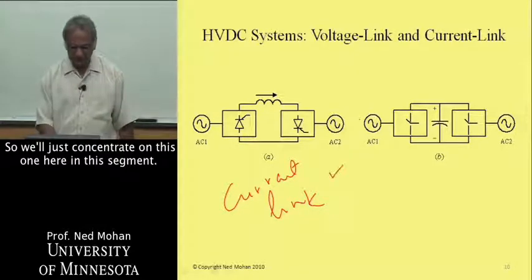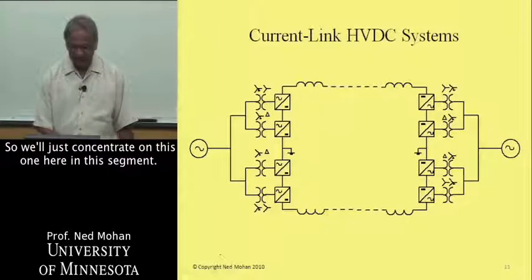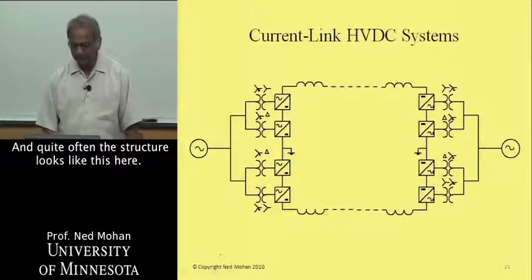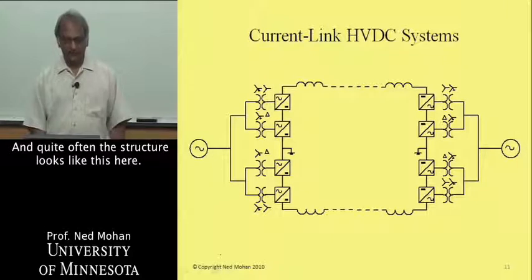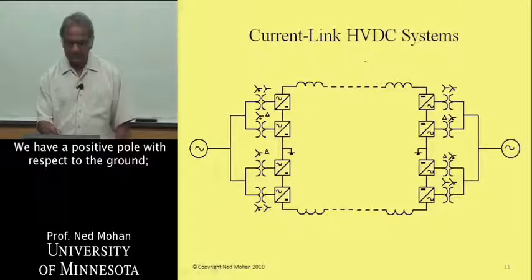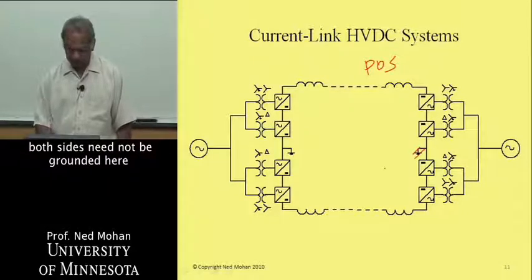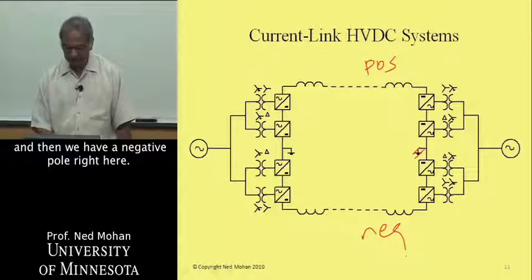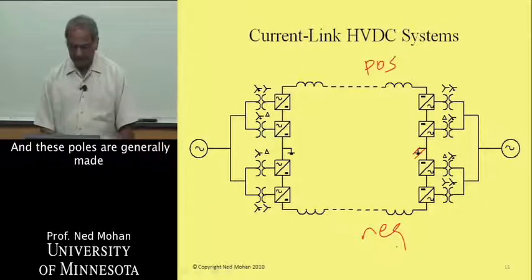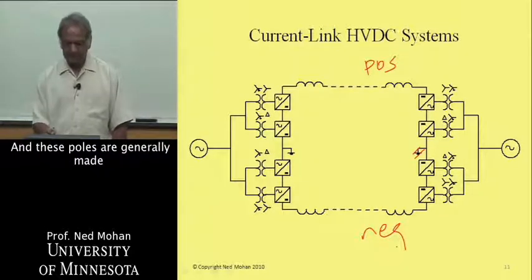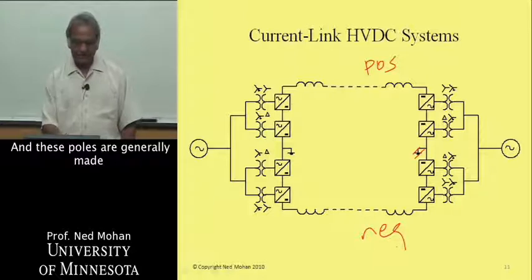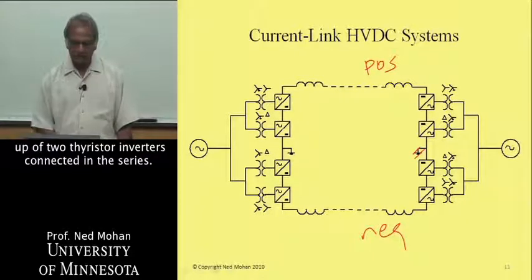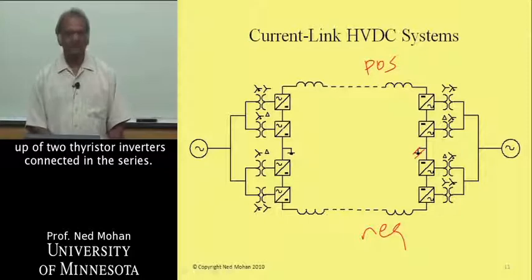We will concentrate on this one here, in this segment. Quite often the structure looks like this, that we have a positive pole with respect to ground. Both sides need not be grounded here, and then we have a negative pole right here.